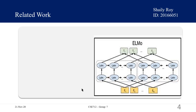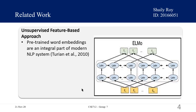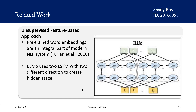Now I'm going to talk about the related work. There is a long history of pre-training general language representations, like the unsupervised feature-based approach, which means learning features from unlabeled data. The goal of unsupervised feature learning is often to discover low-dimensional features that capture some structure underlying the high-dimensional input data.